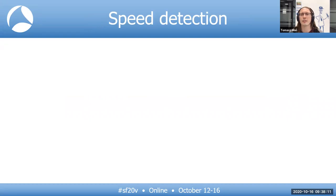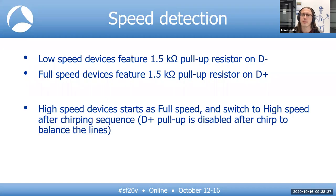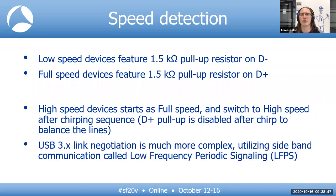There are multiple speeds, so the device and host need to agree on what to use. With low and full speed, the host checks which line is pulled up — if D-minus is pulled up it's low speed, if D-plus is pulled up it's full speed. High speed was added later and added a chirping sequence. The device initially starts at full speed with D-plus pulled up. The host starts chirping; full speed devices ignore it, but high speed devices chirp back. When the chirping is complete, device and host switch to high speed and the D-plus pull-up is disabled to balance the lines.